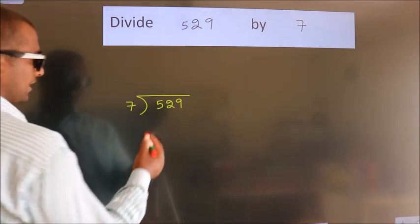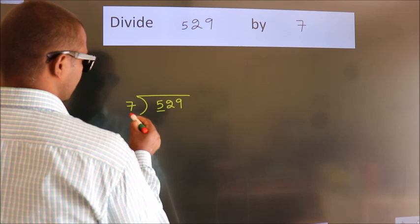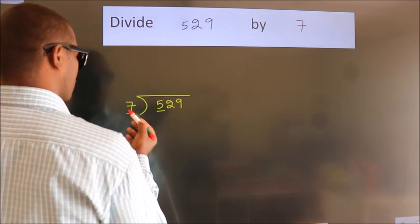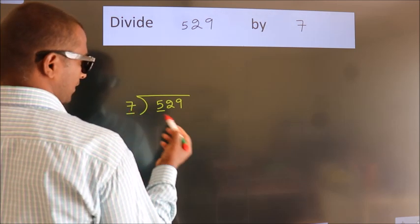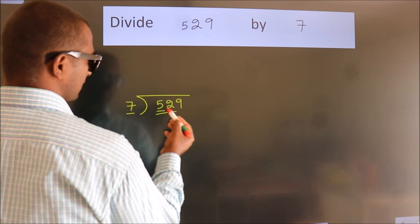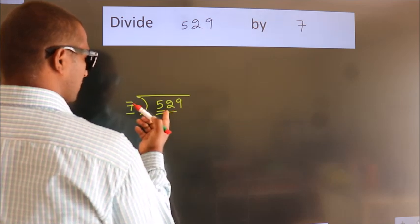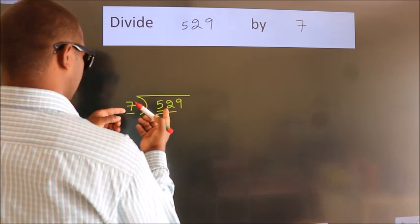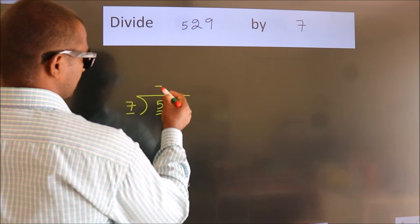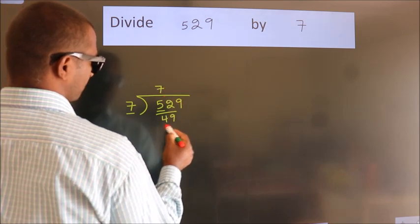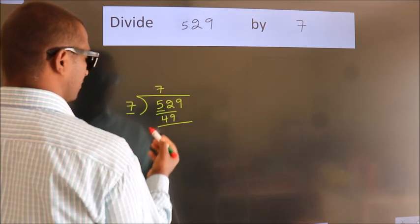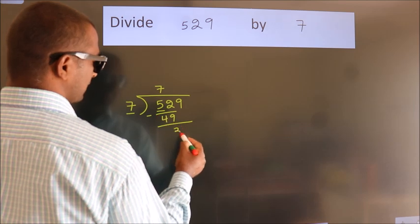Next. Here we have 5. Here 7. 5 smaller than 7. So we should take 2 numbers. 52. A number close to 52 in 7 table is 7 7s 49. Now we should subtract. We get 3.